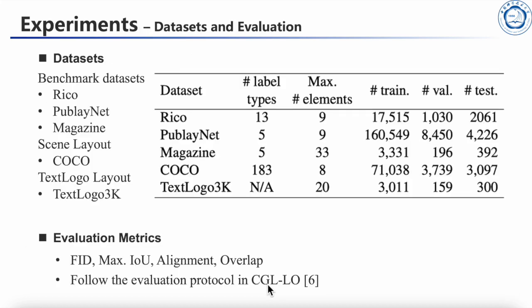For experiments, we evaluate our model on five public datasets: Ricoh, PublicNet, Magazine, Coco, and TextLogo 3K. We strictly follow the evaluation protocol in prior works and take FID, max intersection over union, alignment, and overlap as our evaluation metrics.